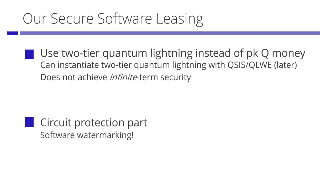Now let's see our construction. As we saw, we can use two-tier quantum lightning instead of public key quantum money for the unclonable state part in Secure Software Leasing. In addition, we can achieve two-tier quantum lightning from the SIS or LWE assumption against quantum adversaries. We will see a concrete construction later. It is easy to see we cannot use two-tier quantum lightning to achieve infinite-term security, since the lessee should not have the secret key.